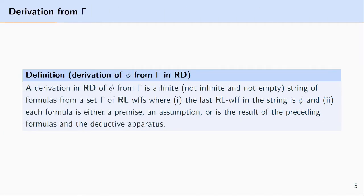The notion of a deductive apparatus makes reference to a derivation. I've covered the notion of a derivation before but I just want to briefly cover it again here. All a derivation is is a finite series of well-formed formulas. And we talk about a derivation from a set of formulas, let's say gamma, to a formula, let's say phi.